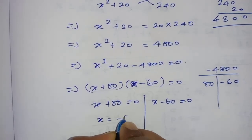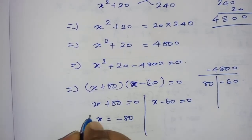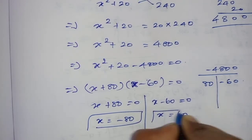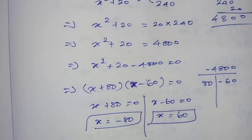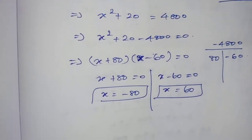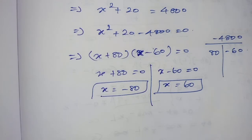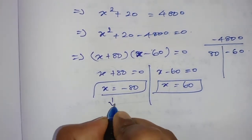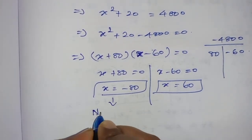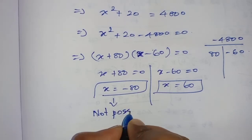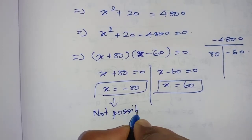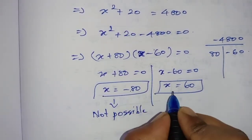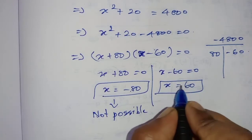From the factors, x equals negative 80 or x equals 60. Since speed cannot be negative, x equals negative 80 is not possible and must be rejected. Therefore, x equals 60.